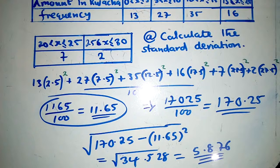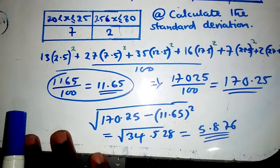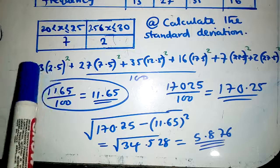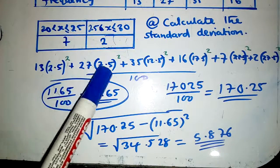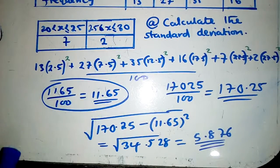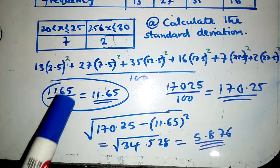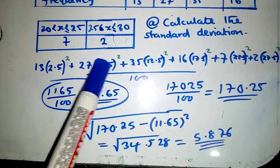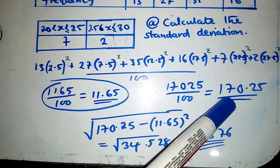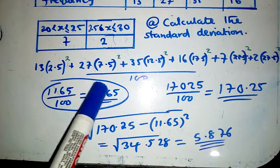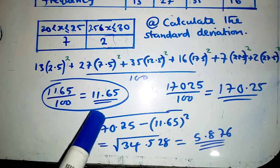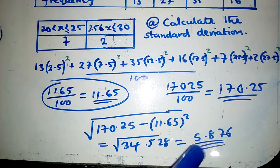There are many ways to find standard deviation — the table method or this method — but this method is very easy to remember. First, get the midpoints and solve for the mean by dividing by 100. Then square the midpoints, multiply by frequencies, divide by 100, subtract the mean squared, and take the square root. That's your final answer. Thank you for watching, and remember to subscribe to my YouTube channel. This is Cchamba Jacob.